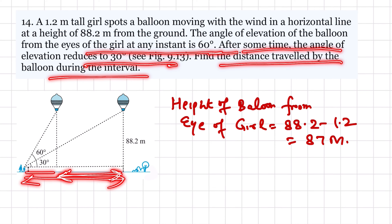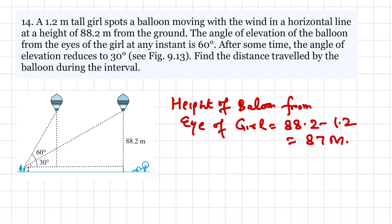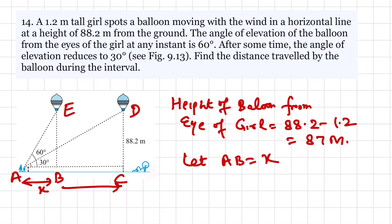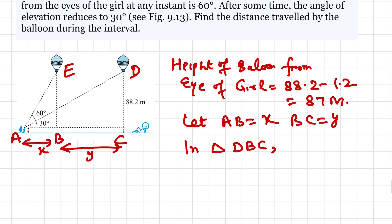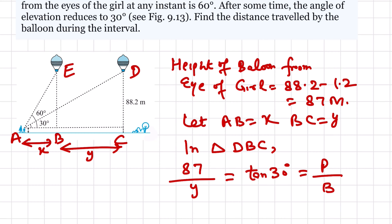Let the points be A, B, C, D, E. Let AB = x and BC = y. In triangle DBC, 87 divided by y equals tan 30° = 1 over root 3. So the total distance AC gives x + y = 87 root 3 from triangle DAC with angle 30°.